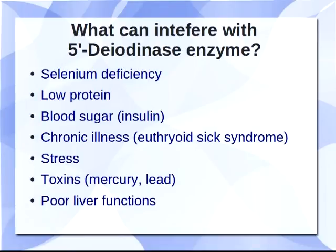Toxins — mercury and lead — can be problematic, and also poor liver function. Conversion of thyroid hormone primarily happens in the liver; that's where T4 is converted into T3. So sometimes people need to do a little bit of work to help the liver. We are living in a very toxic world where the liver can be overburdened, so that's another factor.